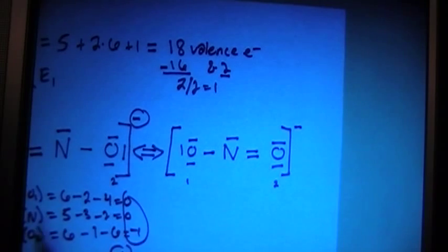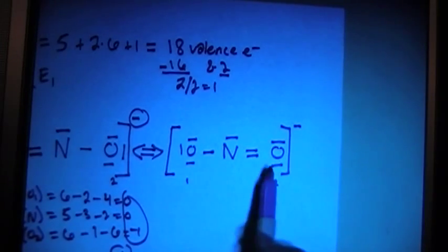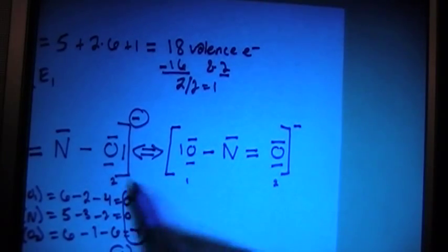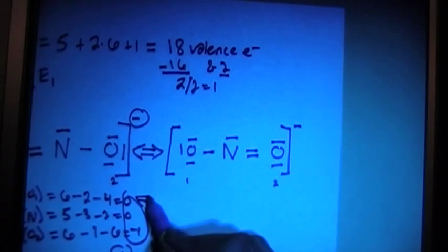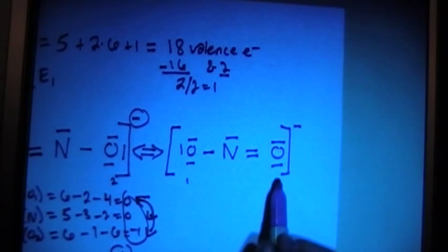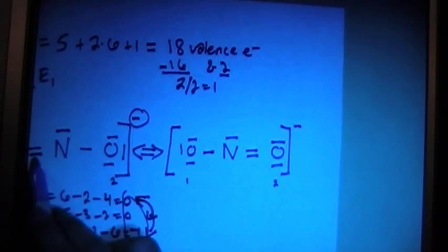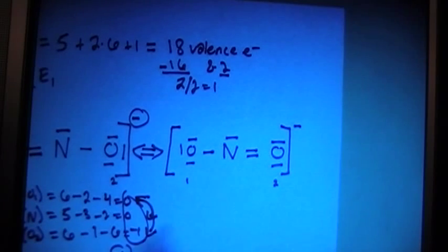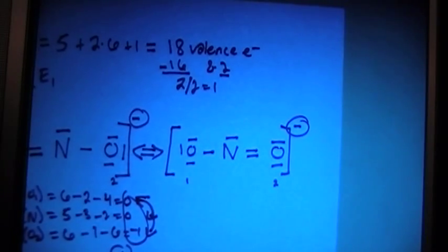And if you notice, these formal charges are often going to apply to these atoms as well, except 1 and 2 are going to be switched. I'm sorry, 1 and 2 here are going to be switched, because the 2 on this one has the double bond, whereas 1 over here has the double bond. So the sum is both going to be equal to negative 1, which is what the charge is on the ion.